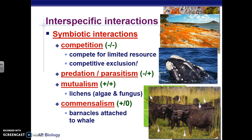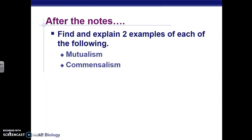One of the things your guided questions ask you to do is look up more examples — examples I didn't give — of parasitism, mutualism, and commensalism. You only have to find one real example of each of these three relationships. I'm now going to upload this video and then do another video that includes the rest of the notes.